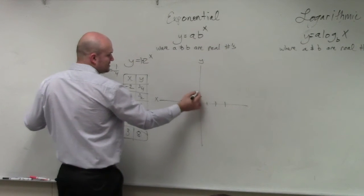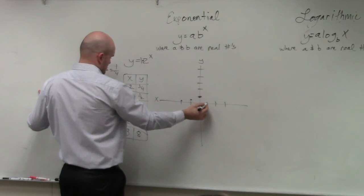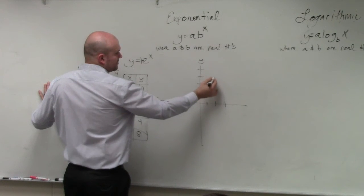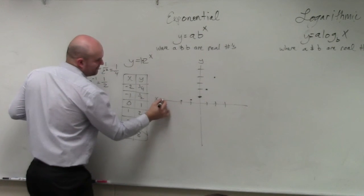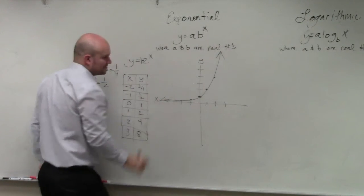At x equals 1, we're at y equals 2. And at x equals 2, we're at 4. So by graphing this, what you can see is our graph is going to look something like that.